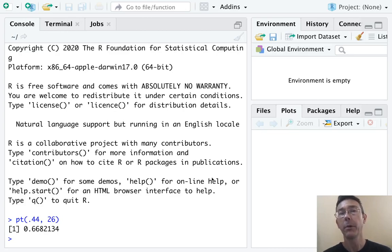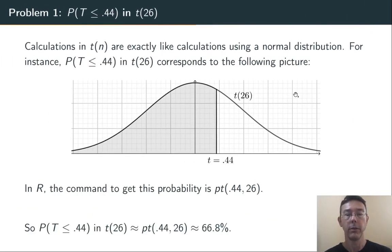Again, this is the probability of randomly getting a t-score less than or equal to 0.44 in this t-distribution. What we're saying here is that that shaded area is about 66.8% of the area under that graph.